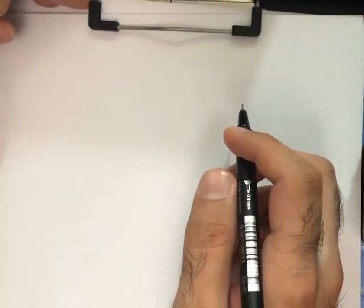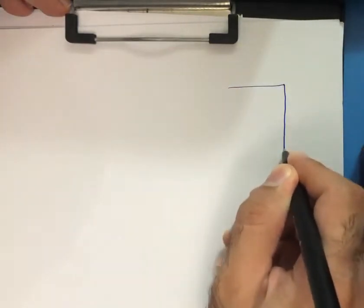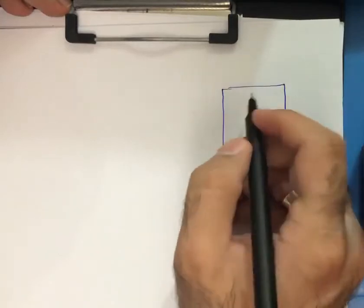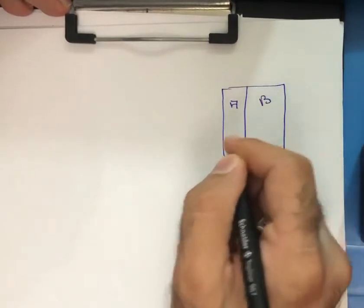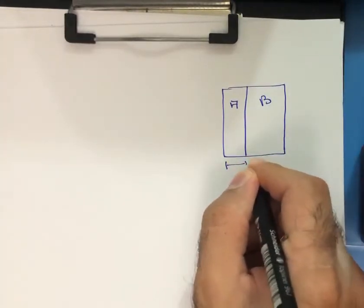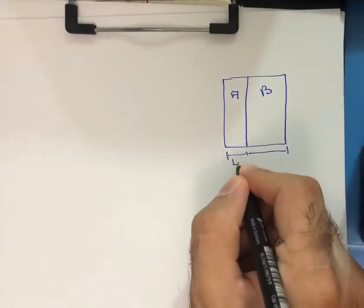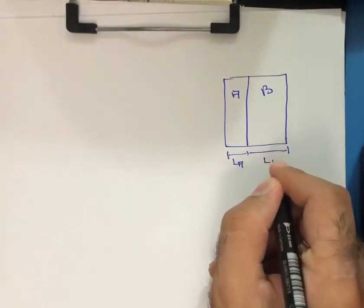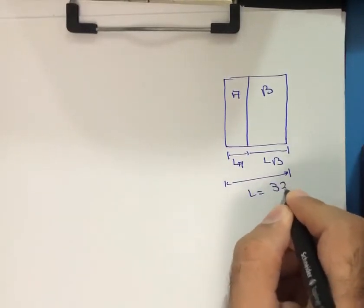Let us consider a reactor wall and plot it schematically. This is wall A and this is wall B. The thickness of each layer is very important in conduction heat transfer analysis. This is L_A, the thickness of wall A, and L_B, the thickness of wall B. The total thickness is L equal to 320 millimeters.